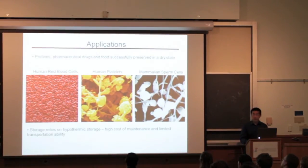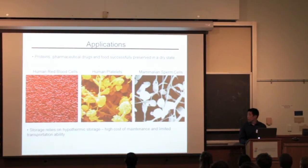If we understand how desiccation tolerance works, we can possibly desiccate red blood cells, human platelets, and sperm cells for storage and transportation.